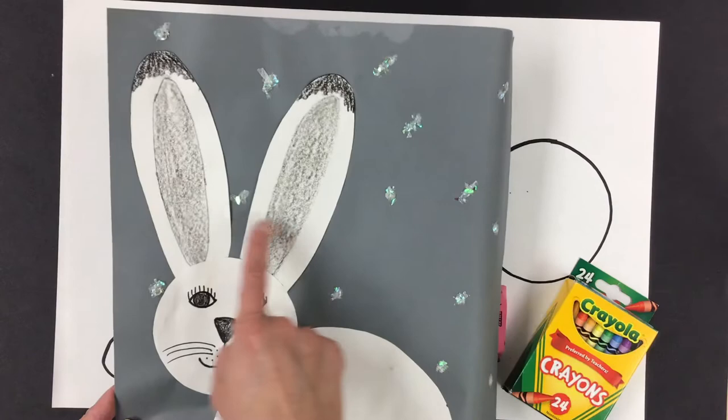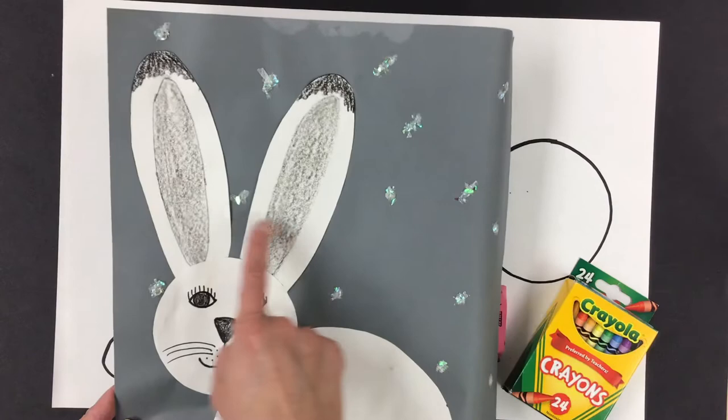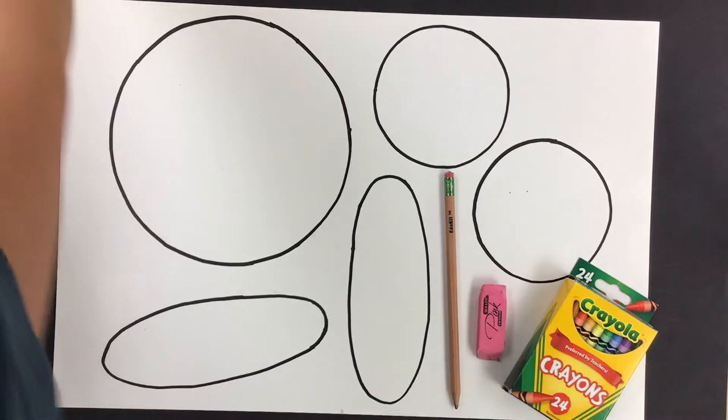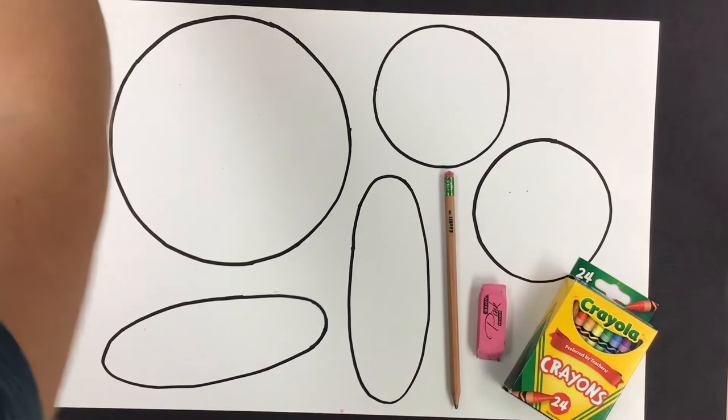Then I bet you can guess what these are. Here's our ears. Later, you'll perhaps want to add a fluffy little tail. But we'll get to that another time.